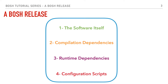For example, it can be deployed in an environment without internet or external network access and it should still work. So we're expecting from a BOSH release not to depend on any artifacts that it needs to download from somewhere during compilation or during runtime.